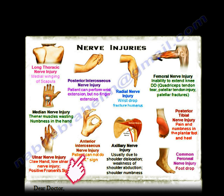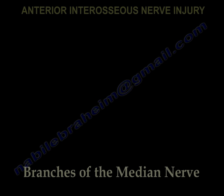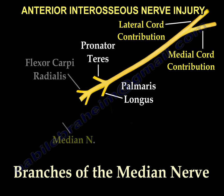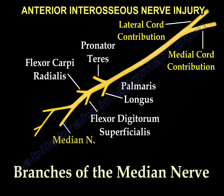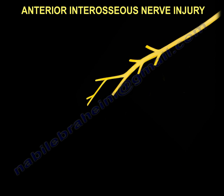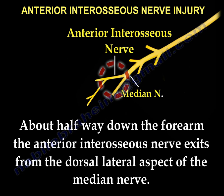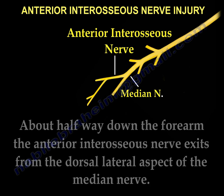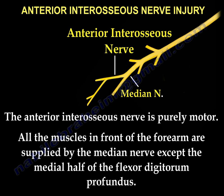Anterior Interosseous Nerve Injury. Here you can see the branches of the median nerve. About halfway down the forearm, the anterior interosseous nerve exits from the dorsolateral aspect of the median nerve. The anterior interosseous nerve is purely motor. All the muscles in front of the forearm are supplied by the median nerve, except the medial half of the flexor digitorum profundus.